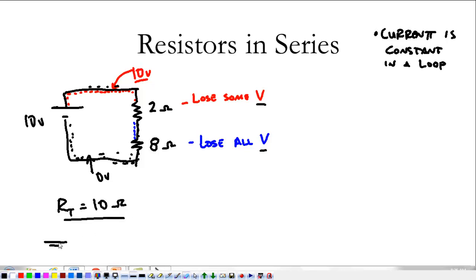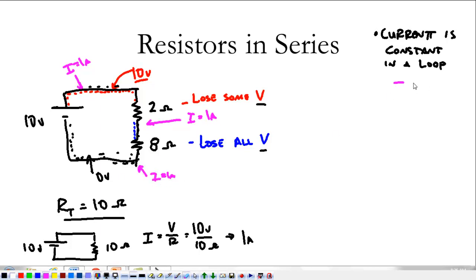Really, we could redraw this circuit as the 10 volt battery attached to not two, but just one resistor that happens to be 10 ohms. And looking at that, the current is going to be the voltage divided by the resistance, 10 volts divided by 10 ohms. So total, the current in this thing is 1 amp. And what that means for us is that at every point, at all of these points, the current is 1 amp, all the way through. Because the current in a loop is constant.